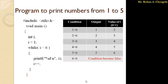Let's discuss one simple example. As in the previous part, we had to print numbers from 1 to 5 — the same example is here. We have to print numbers from 1 to 5 with the help of while loop. I include the header files and begin the program.